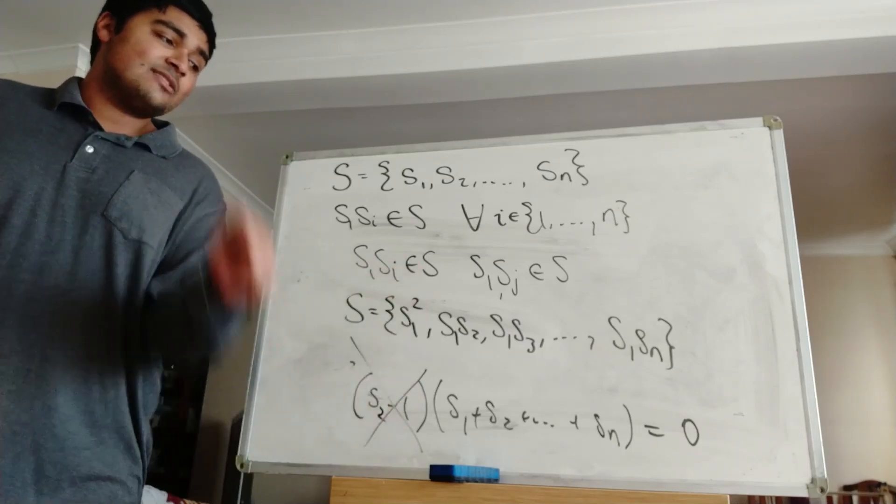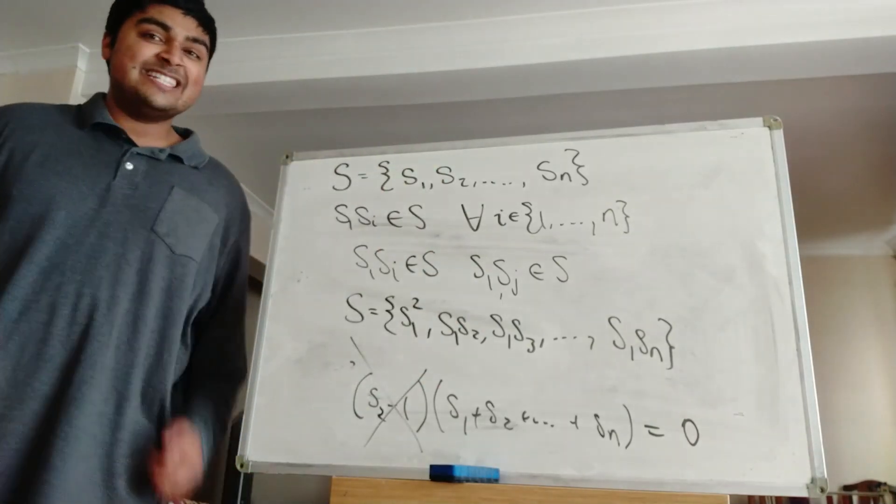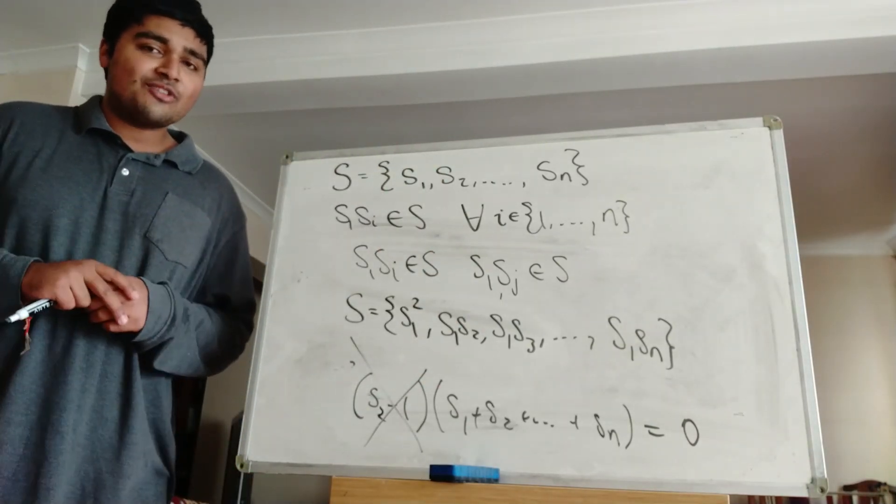So we can just pick any of the others, plug it into this guy here, cancel this from both sides, and we get the sum of the elements is equal to 0. And that solves our problem.